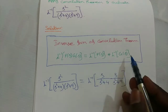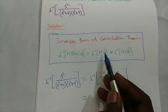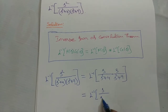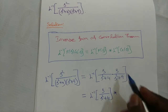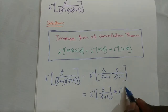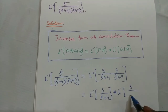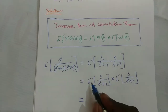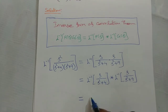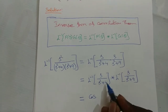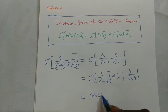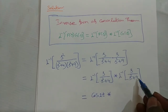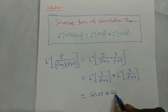By using the convolution theorem this can be written as L inverse of F(s) star L inverse of G(s), that is [s/(s²+4)] star [s/(s²+9)]. Now L inverse of s/(s²+4) is cos(at) where a²=4, so it is cos(2t). Star L inverse of s/(s²+9), where 9 is 3², so this is cos(3t).